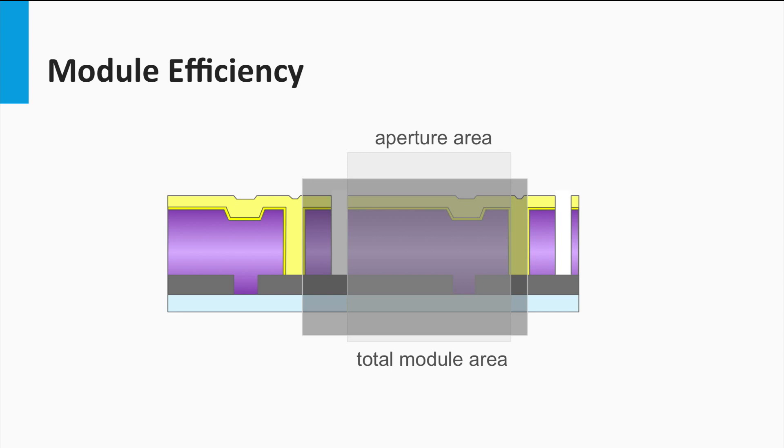The German manufacturer Manz AG has presented a 15.9% aperture area efficiency and a total area efficiency of 14.6%. Solar Frontier in Japan claims a 17.8% aperture area efficiency on a very small module of 900 square centimeters.